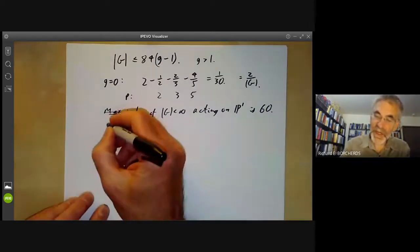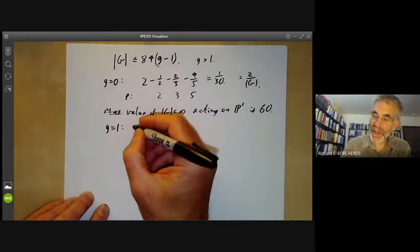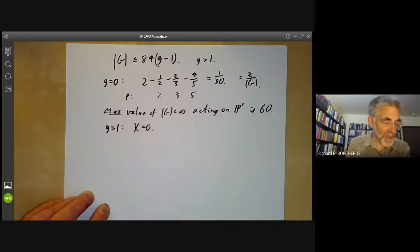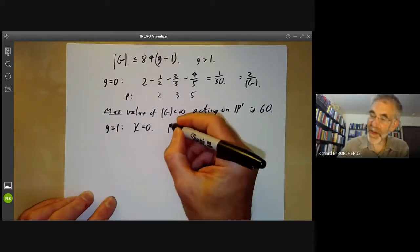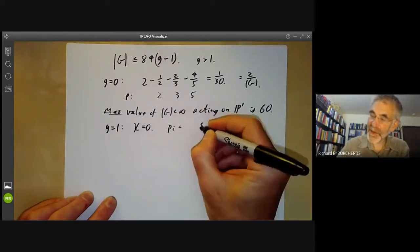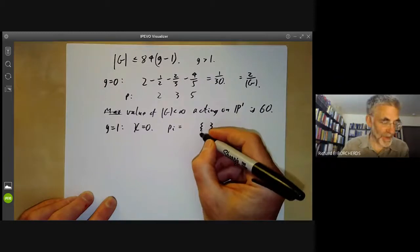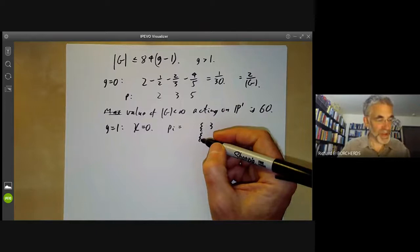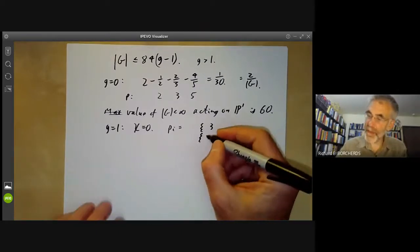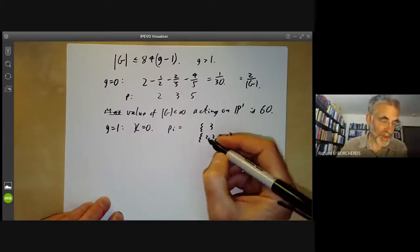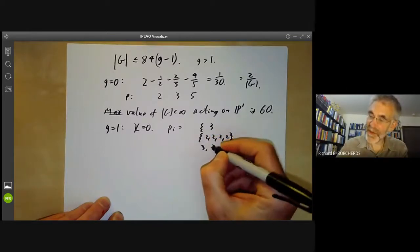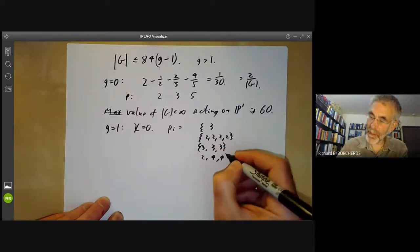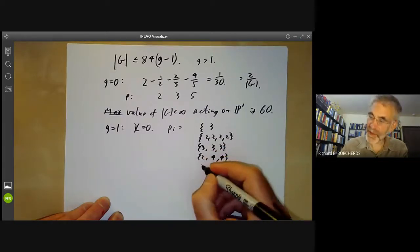Similarly, if G is equal to one, the orbifold Euler characteristic should be zero, and we notice there are several ways of getting this. The numbers could be: we could take the empty set, or we could take two two two, or we could take three three three, or we could take two four four, or we can take two three six.